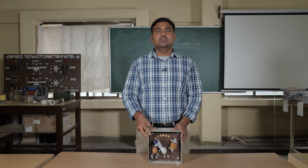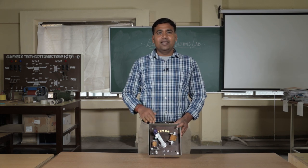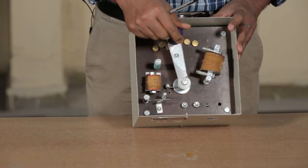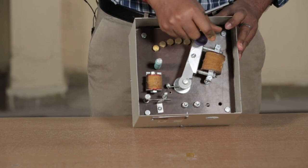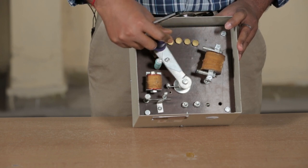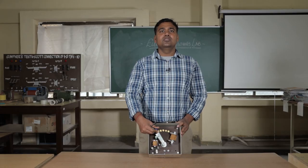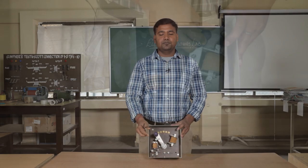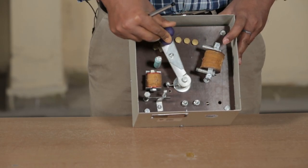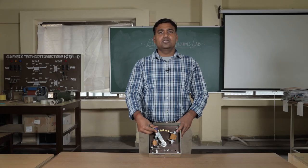We have seen the 3-point starter. This is basically a 2-point starter. Here also, we have a handle which adds up resistance so that the initial current is limited. At the end of the experiment, the handle will automatically come to the minimum point when we complete the experiment and turn off the MCB.